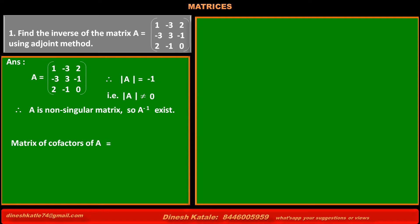The matrix of cofactors of A is denoted by a matrix having elements A11, A12, A13 in the first row, A21, A22, A23 in the second row, and A31, A32, A33 in the third row.